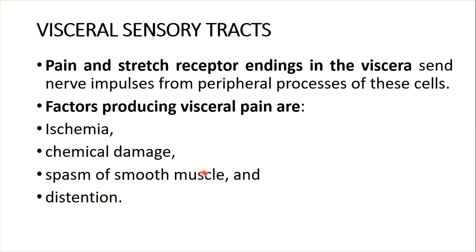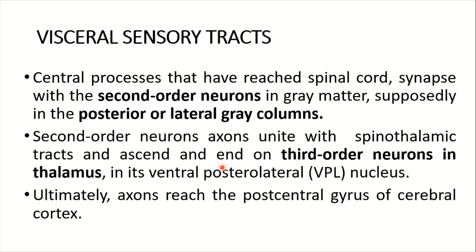The central processes that reach the spinal cord synapse with second-order neurons in the gray matter, supposedly in the posterior or lateral gray column. Second-order neuron axons unite with the spinothalamic tracts and ascend, ending on third-order neurons in the thalamus — in its ventral posterolateral nucleus (VPL). Ultimately, axons reach the postcentral gyrus of the cerebral cortex. This concludes the brief discussion of these three tracts.